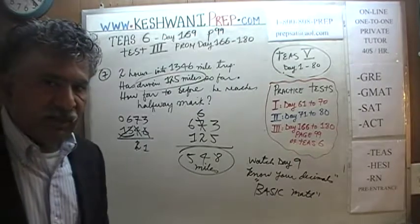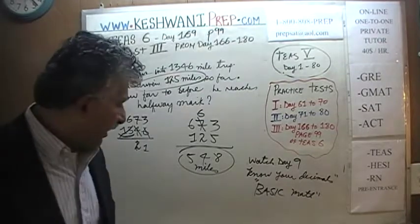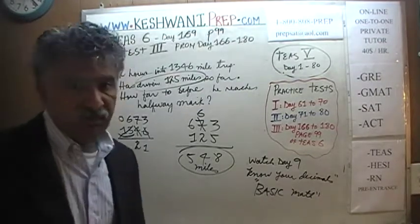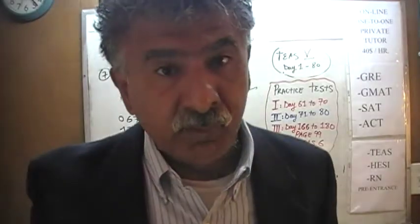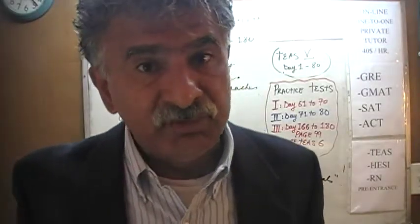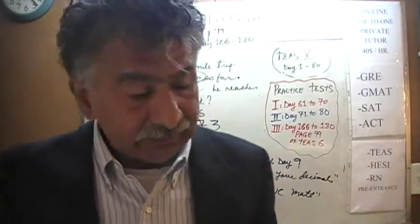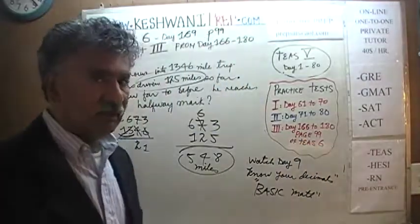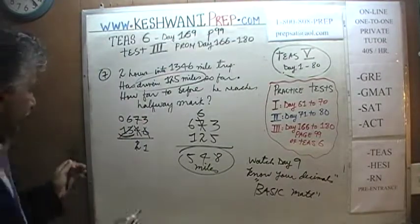If he is travelling at the speed of 55 miles an hour, he has got about 10 hours of driving ahead of him before he gets a break. OK, let's do number 8.